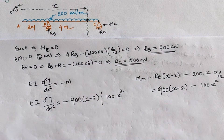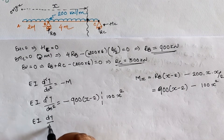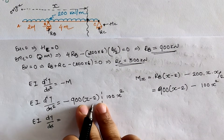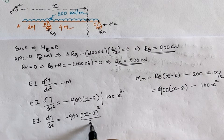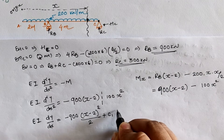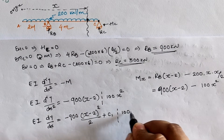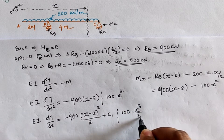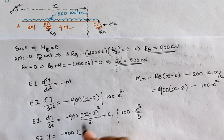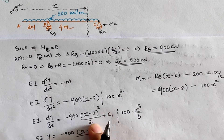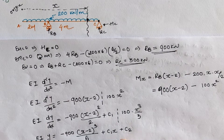Integrating with respect to x gives the slope equation: EI dy/dx = −900·(x − 2)²/2 + C₁ + 100x³/3. Integrating again gives the deflection equation: EI·y = −(900/2)·(x − 2)³/3 + C₁·x + C₂ − 100x⁴/12, where equation A is for slope and equation B is for deflection.